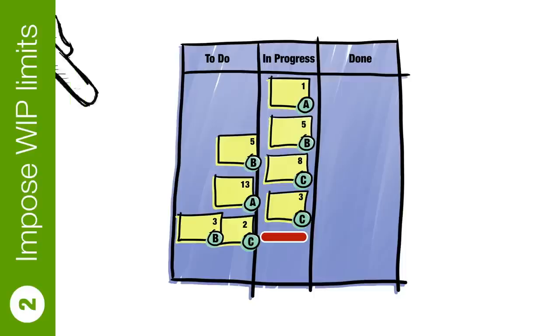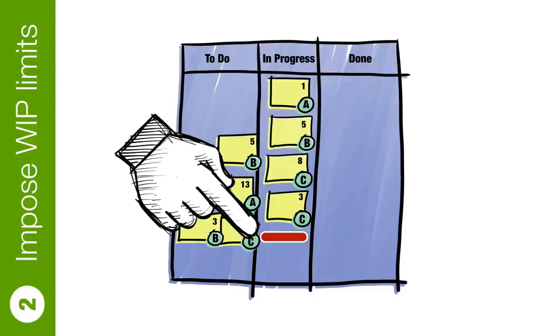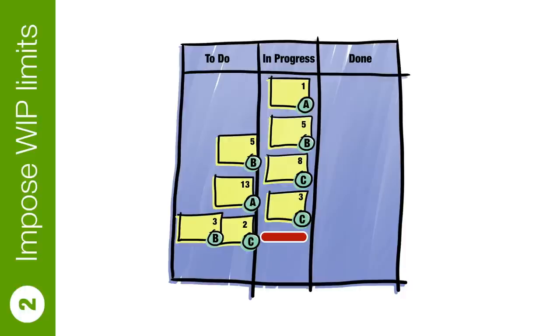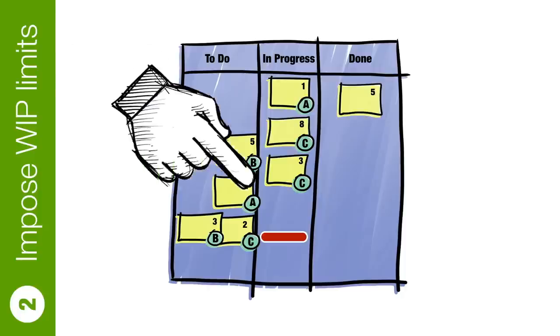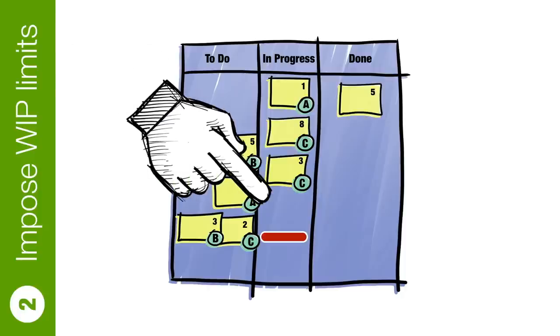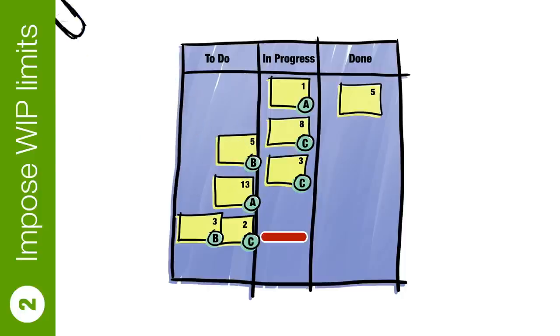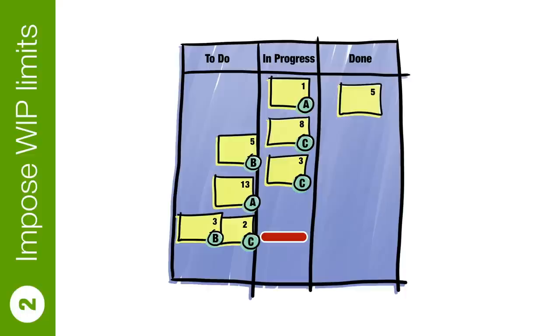Back at the office, the pull system is enabled by a line on the board. When a card moves to the right, it frees up space — and it is this space that is the signal, the Kanban, for the team to pull another card from the left. It's great that we've added a pull to our board, but I think we can take it up a notch.